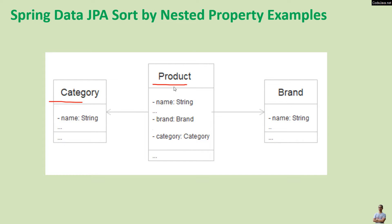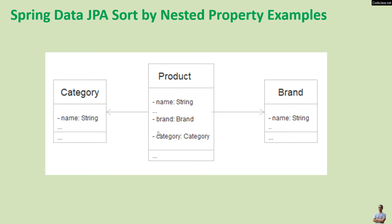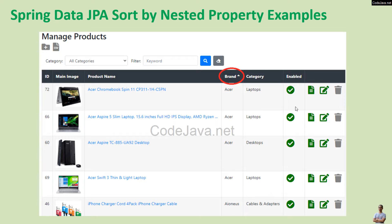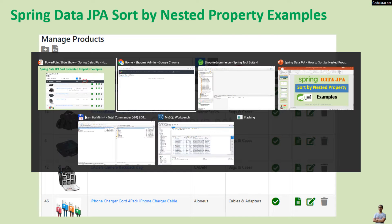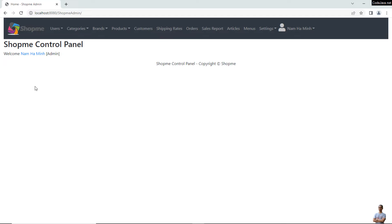It's very common to have this kind of entity relationship between a product and category — product has a reference to category, which is a separate entity, and product also has a reference to a brand, which is also a separate entity. In the user interface, it's very natural that the end user wants to sort the products by brand name or by category name. Let me show you a sample application developed in Spring.